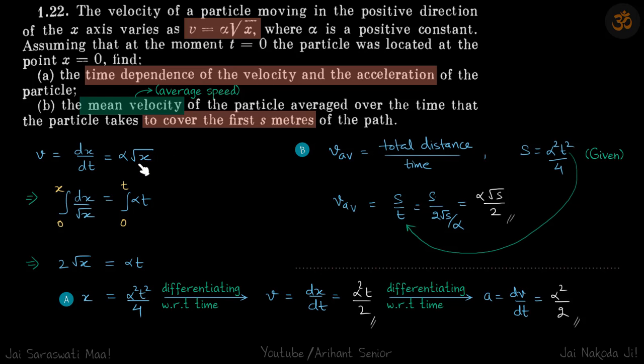We need to find the velocity as a function of time. We'll write it in the form dx/dt first, so we'll get x as a function of time, then we'll differentiate it to get the velocity as a function of time.